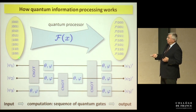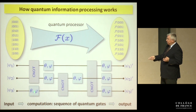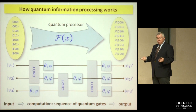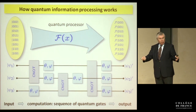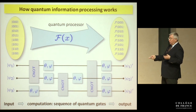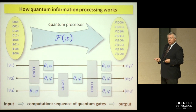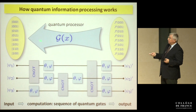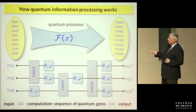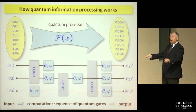A quantum computation starts from an arbitrary superposition in the register, processes it through a sequence of single-qubit and two-qubit operations arranged in a circuit diagram, and produces another superposition. All these are unitary processes, so in principle completely reversible with no classical information gained until the final projective measurement — projecting onto the eigenbasis to extract the result.